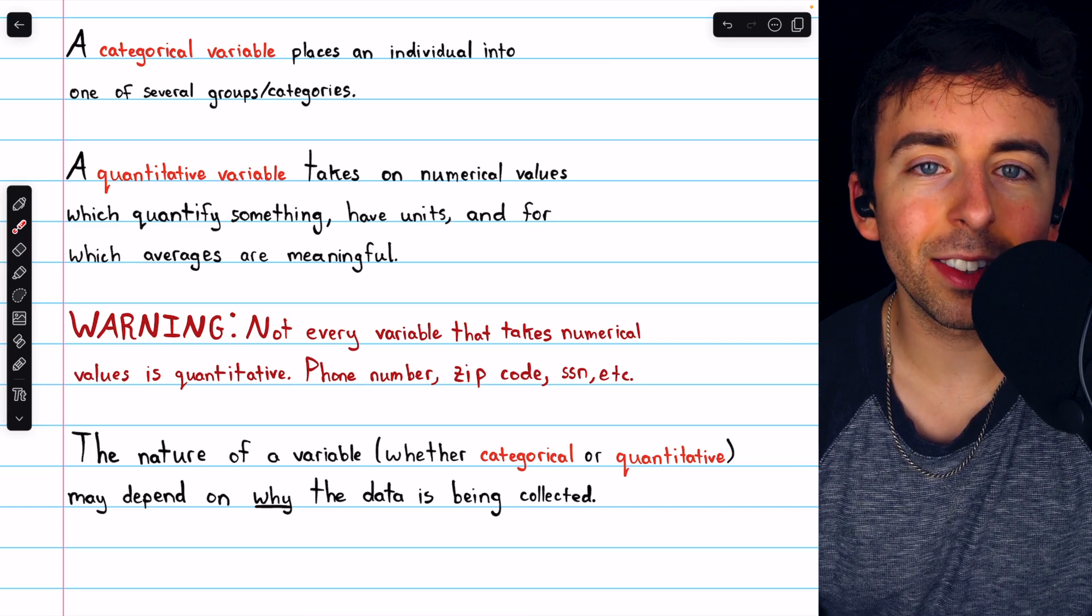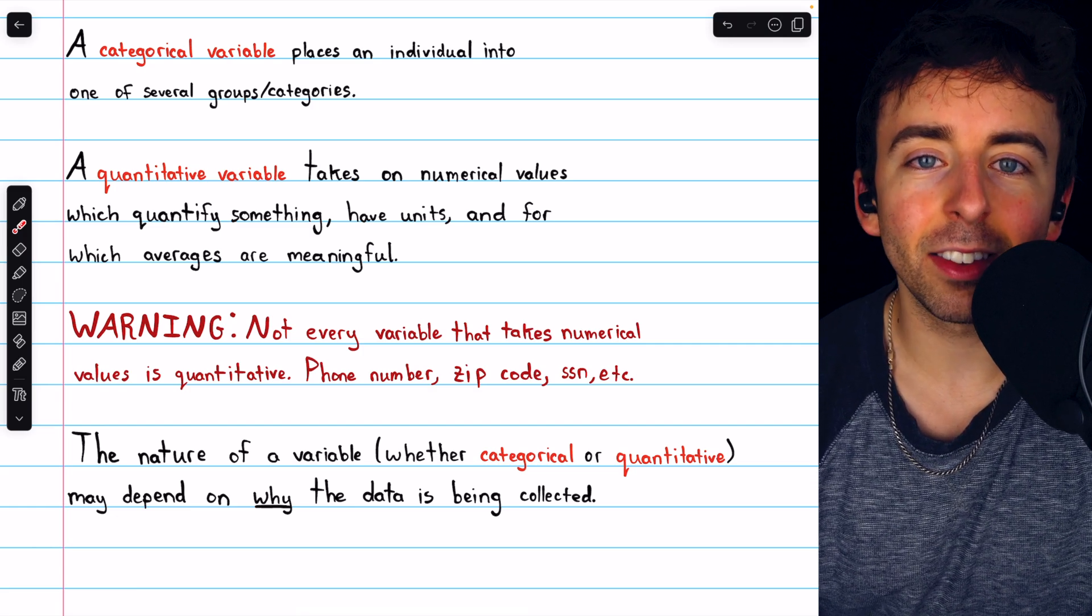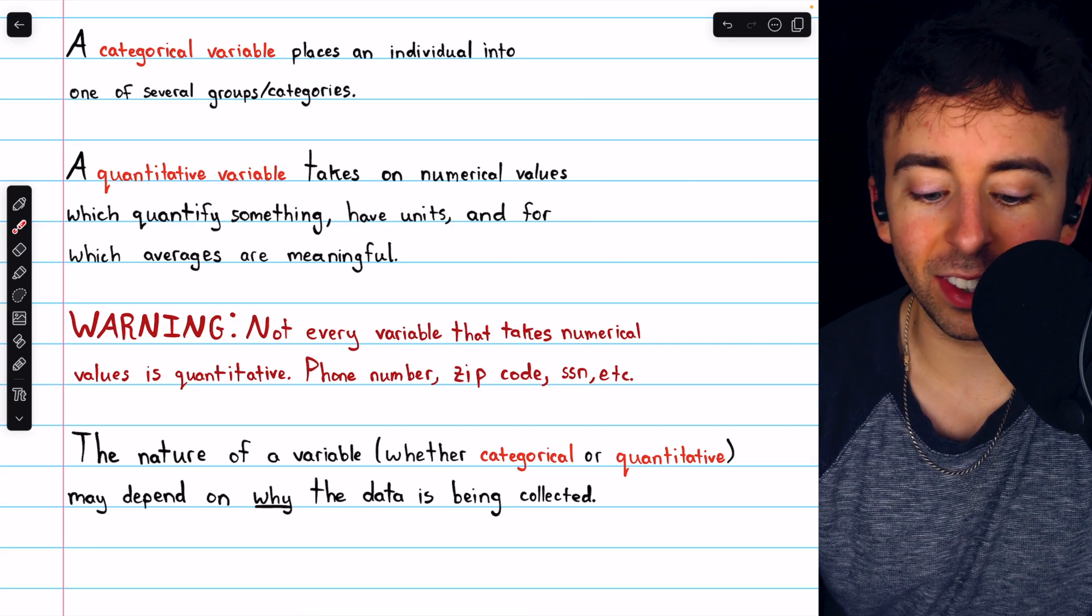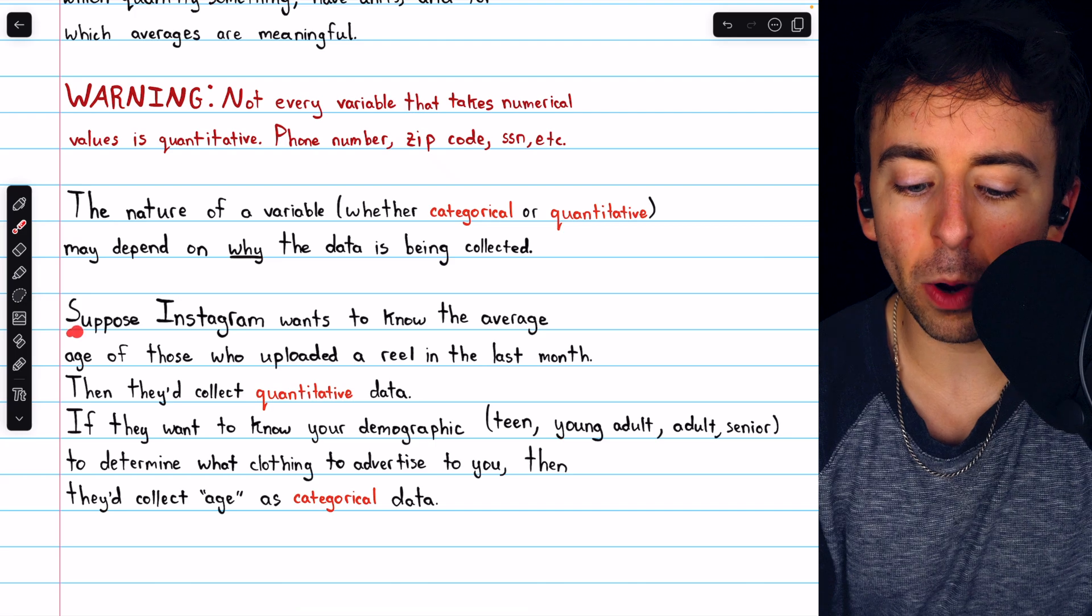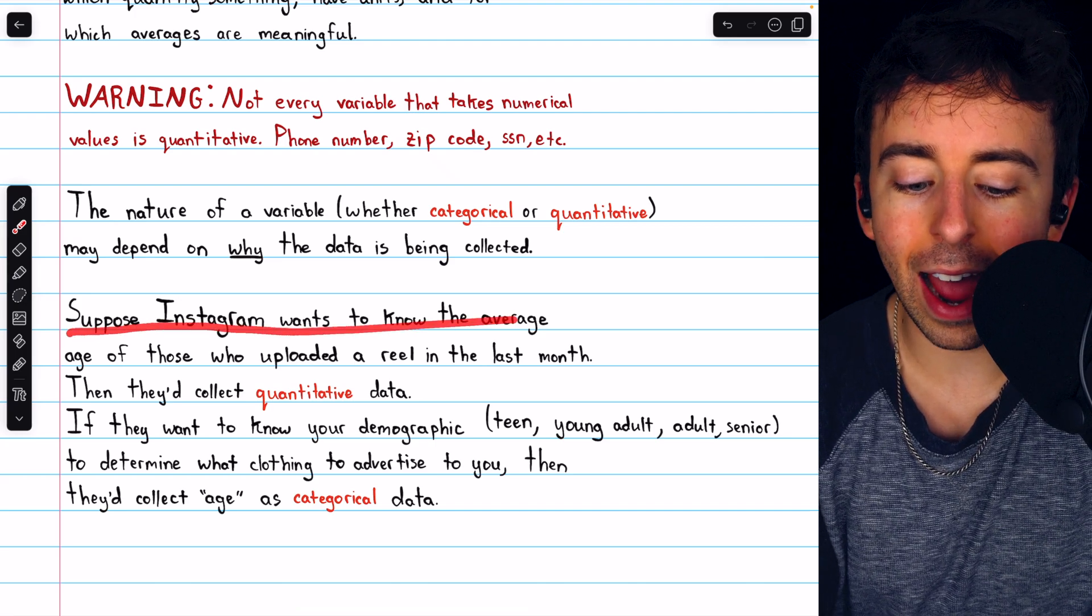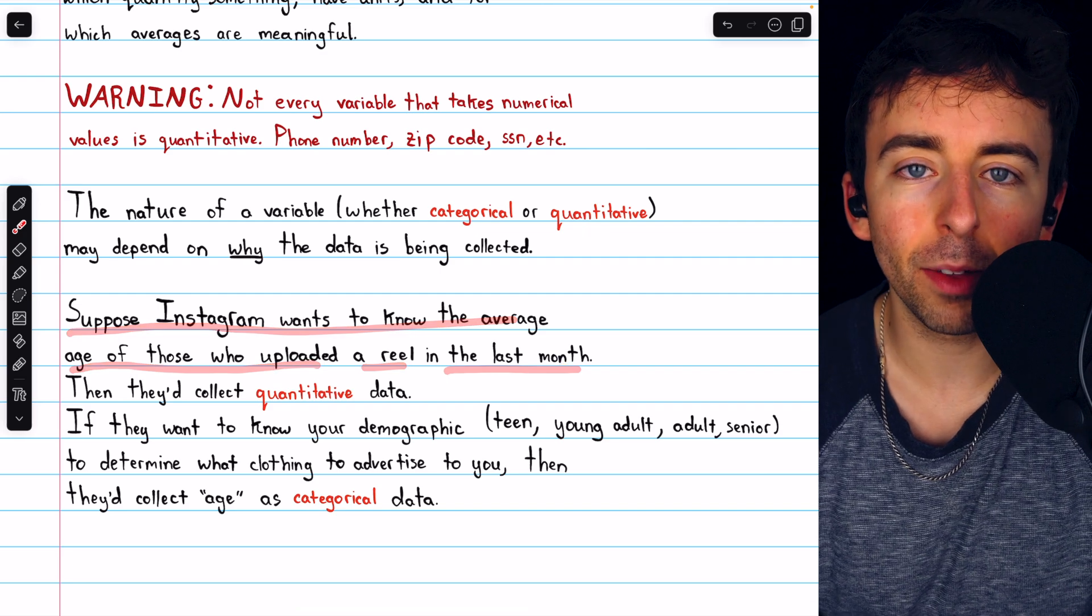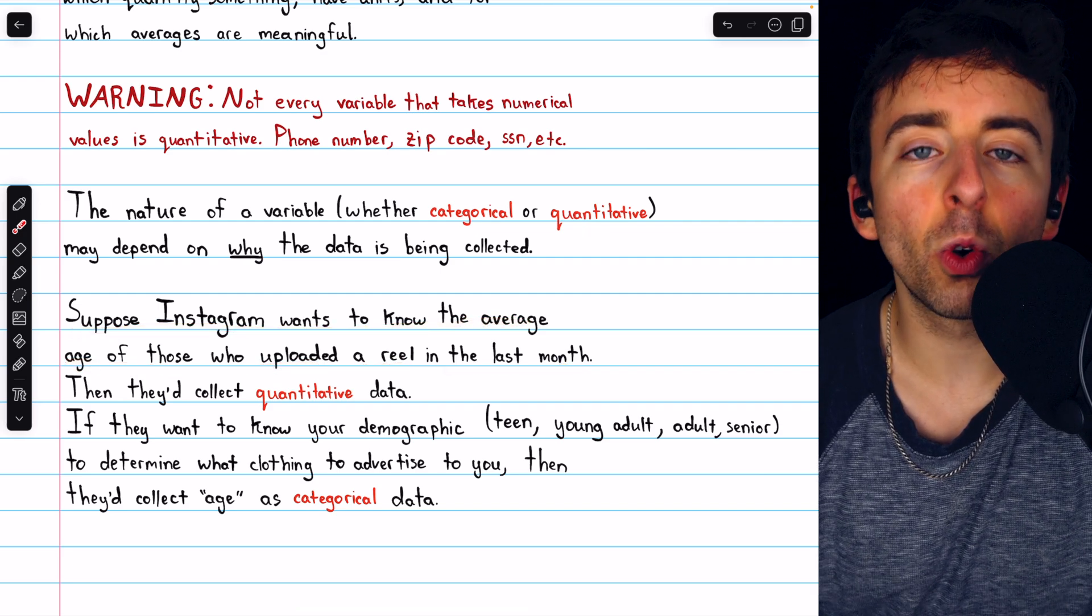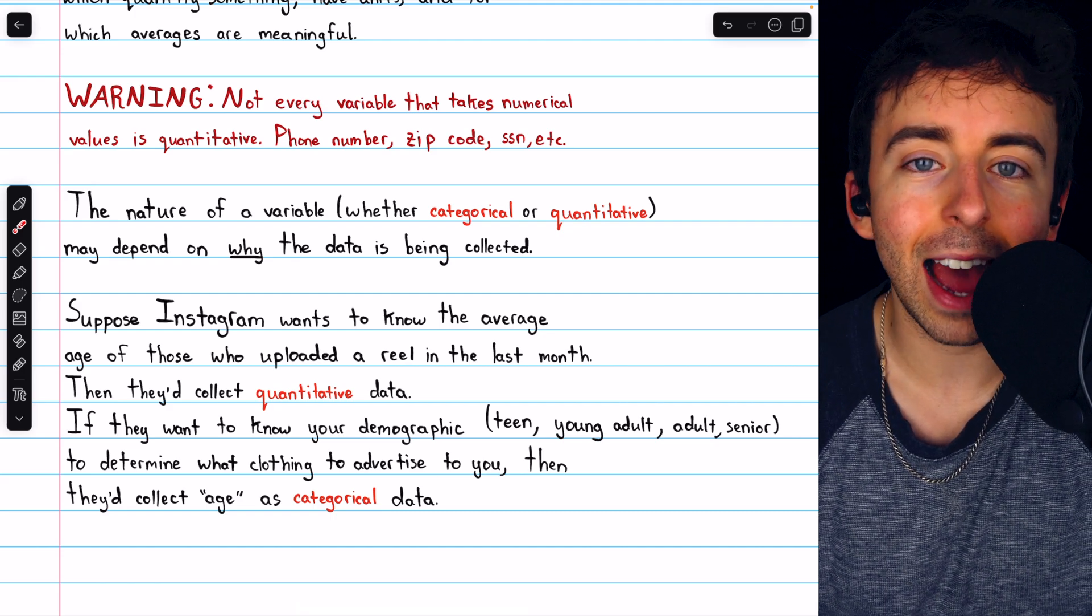In a previous video, we discussed the individuals and variables that make up a data set. That's the who, who is being studied, and the what, what is being measured. But as we see now, the why is also important. For example, suppose Instagram wants to know the average age of those who uploaded a reel in the last month. Since they want to know the average age, they would be collecting this as quantitative data. They collect the ages of those people and then find the average.